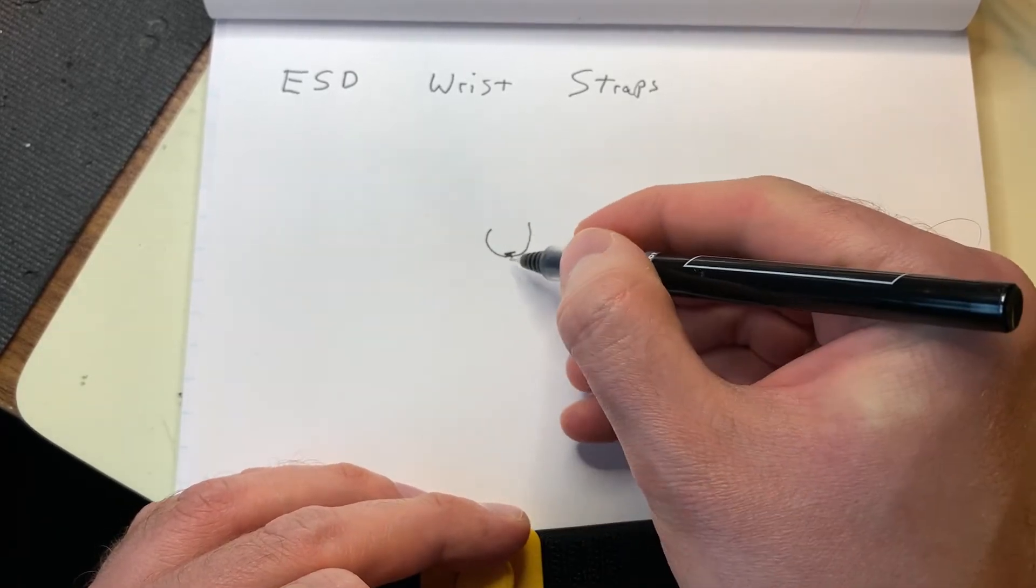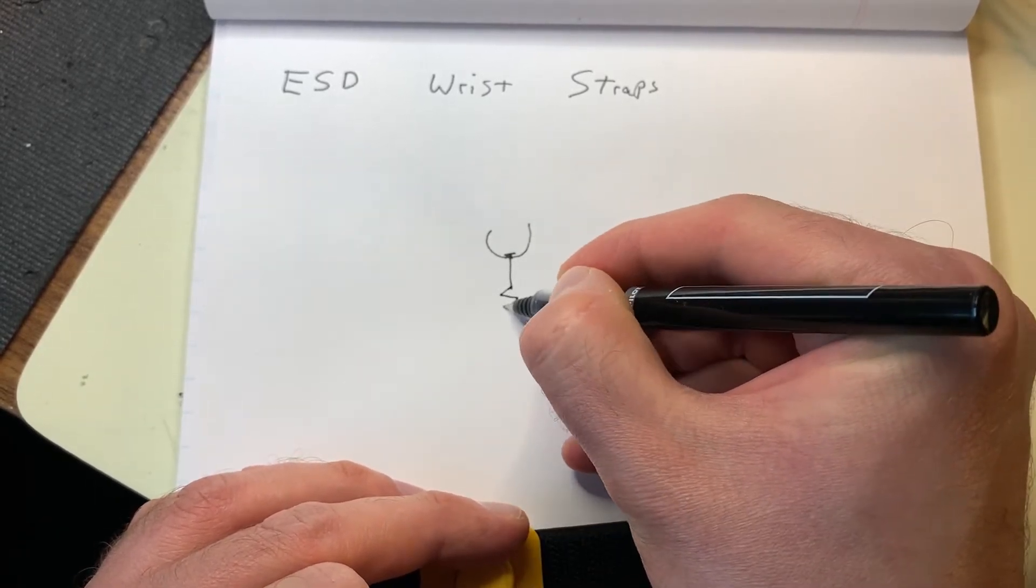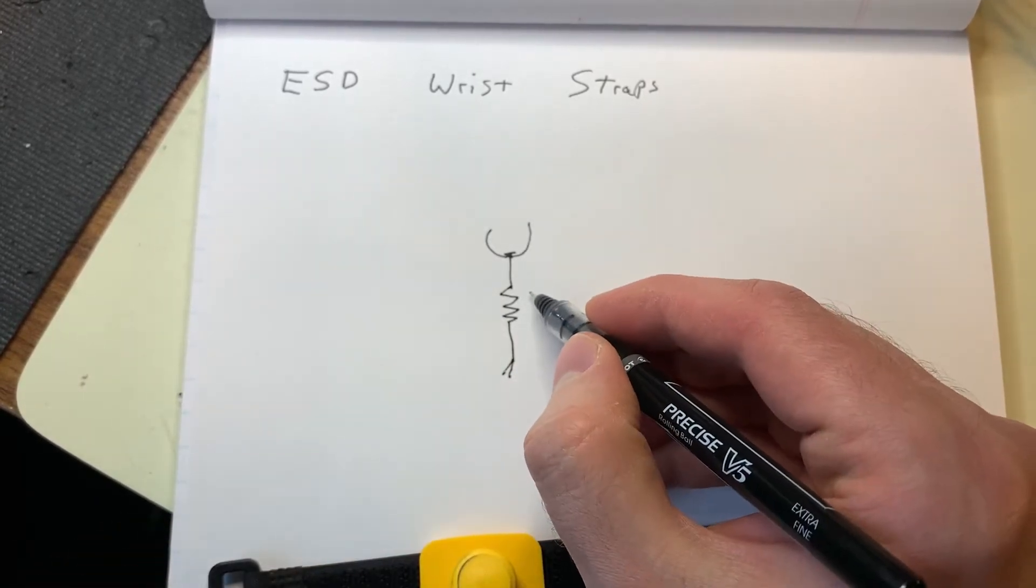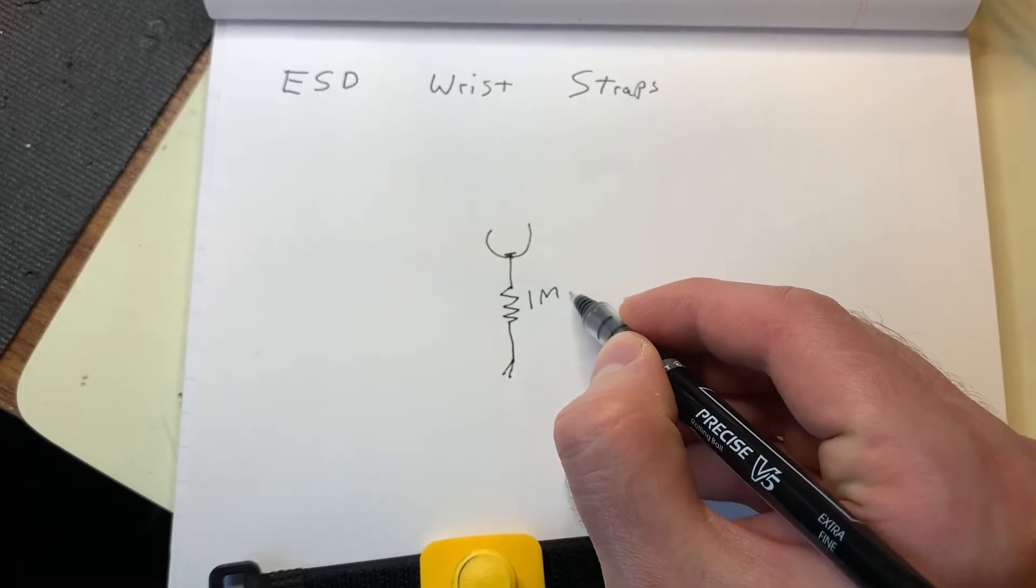It is effectively a resistor with the alligator clip at the end of it, and this resistor happens to be 1M ohms.